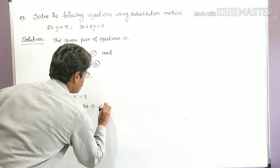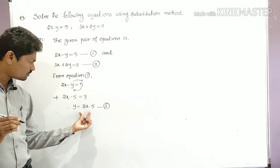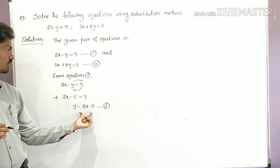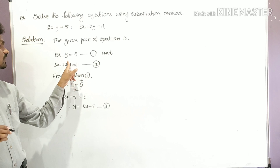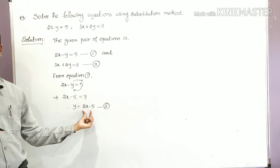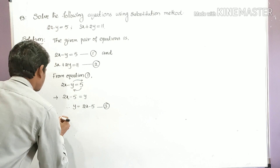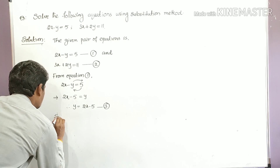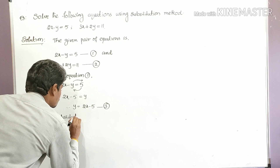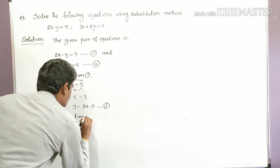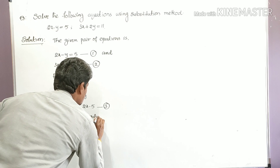Let this be equation number three. Now substitute y equal to 2x minus five in equation two — wherever y appears, substitute y equal to 2x minus five.